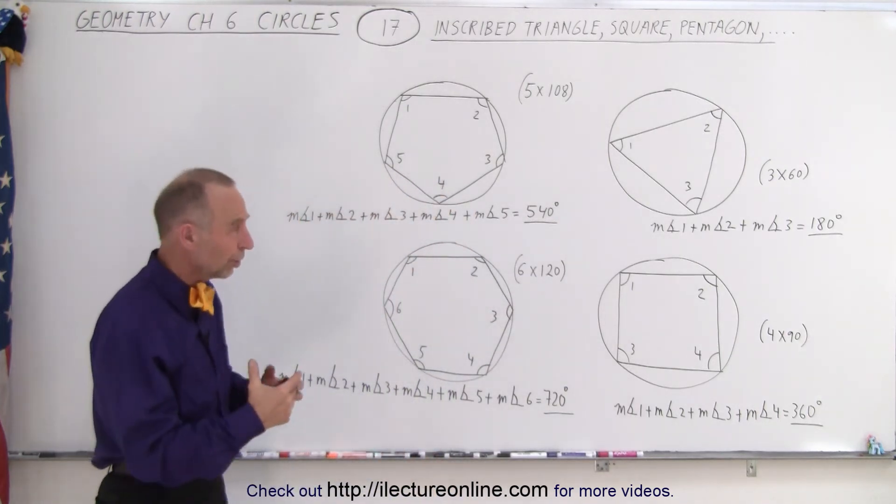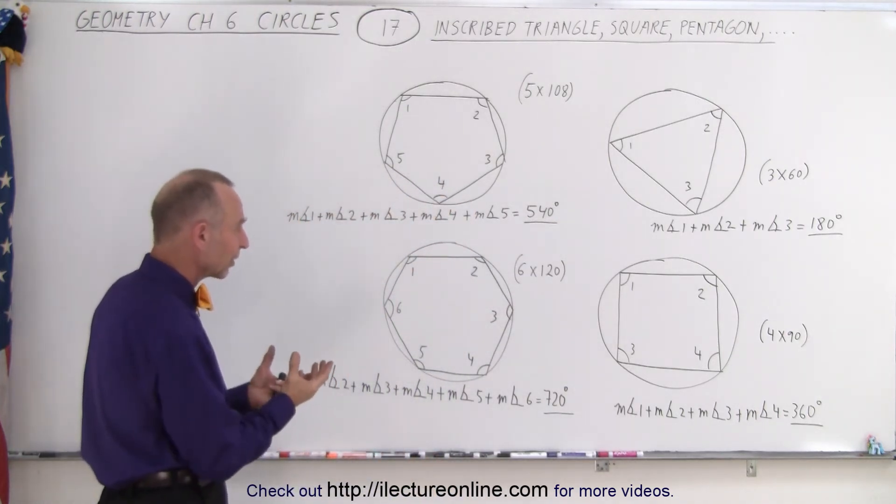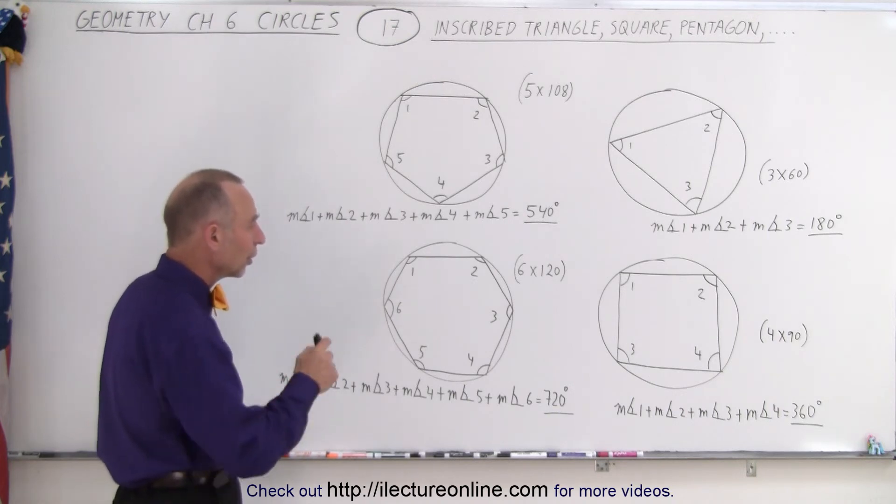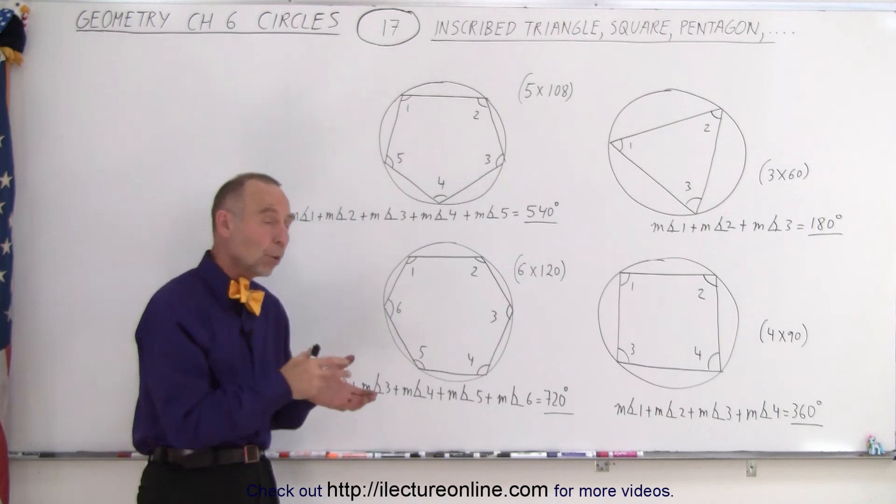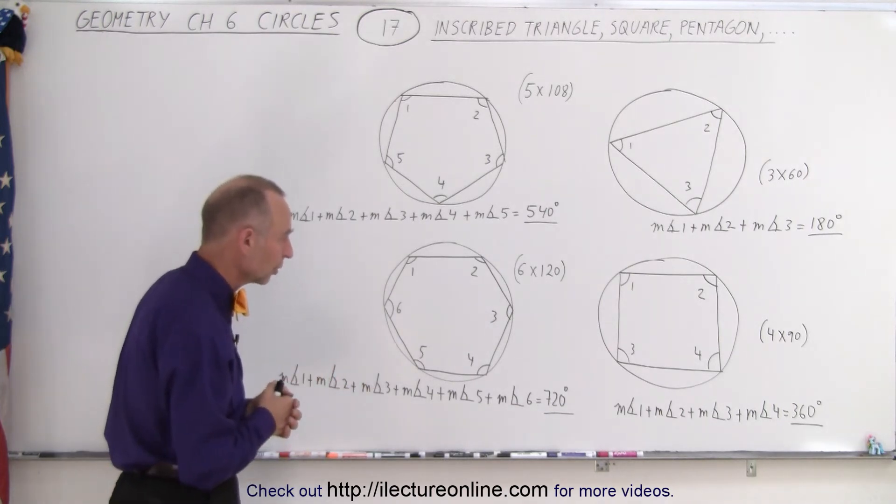So every time you add an extra corner on an inscribed figure inside a circle, the sum of all the angles will add up to 180 degrees more each time you add an additional corner.